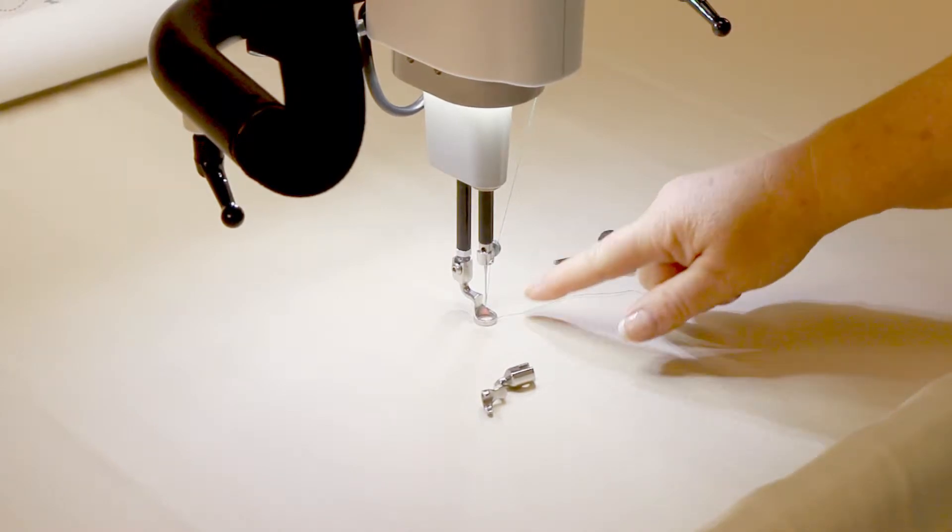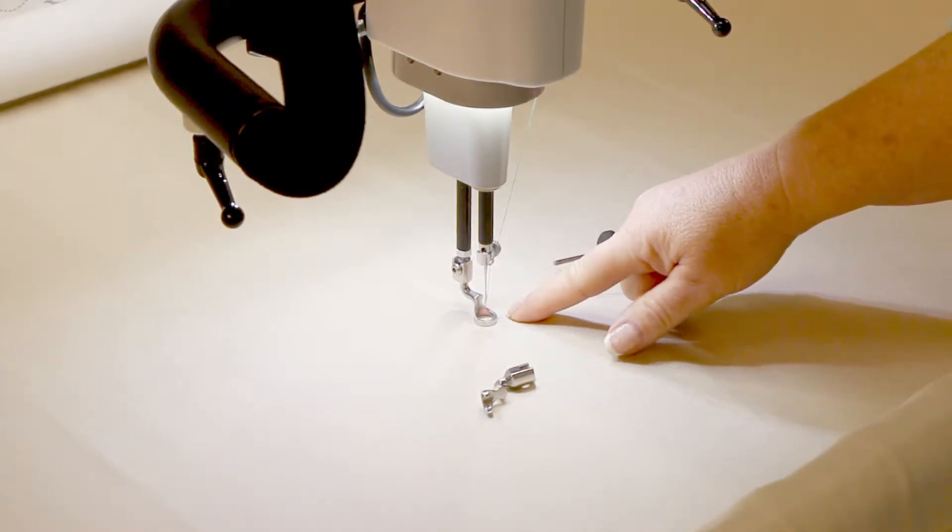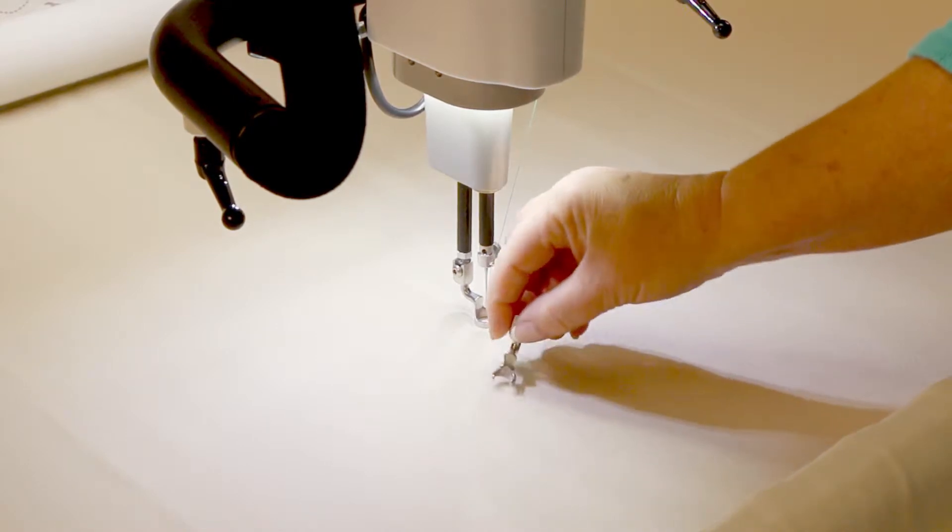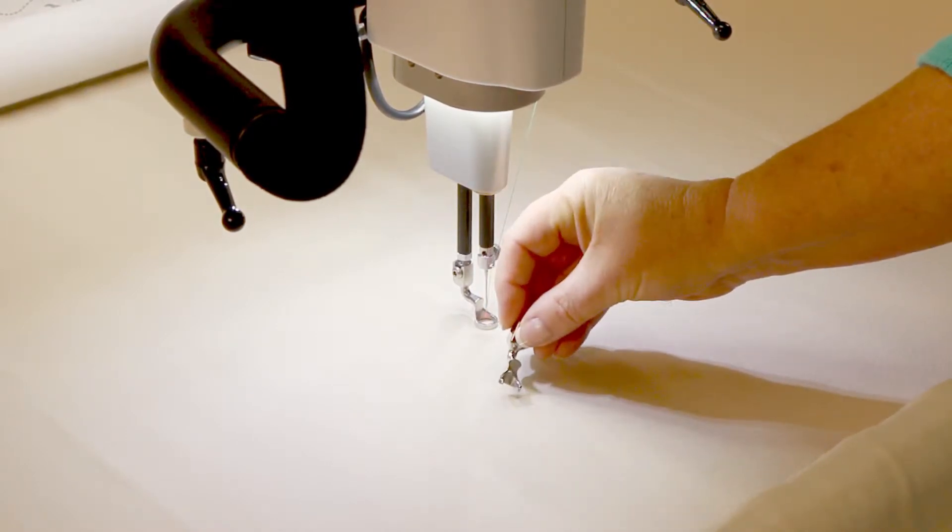The Infinity Machine comes with two hopping feet: the closed toe foot, which we commonly call the ruler foot, and the open toe foot, which we use for micro quilting.